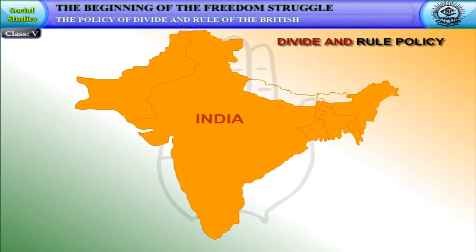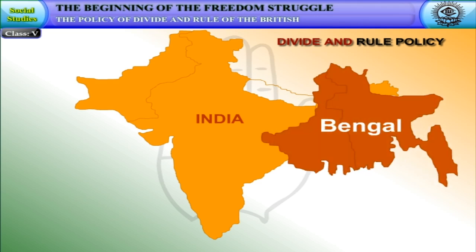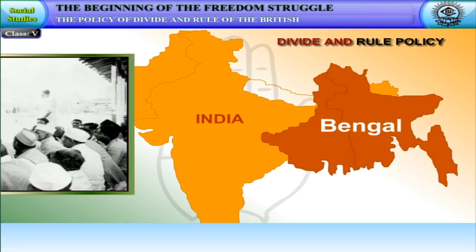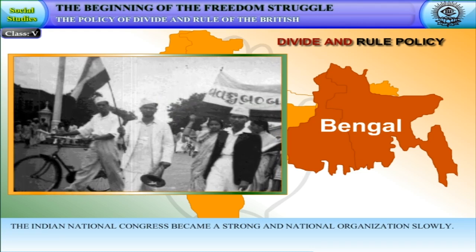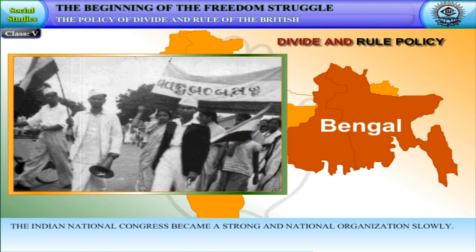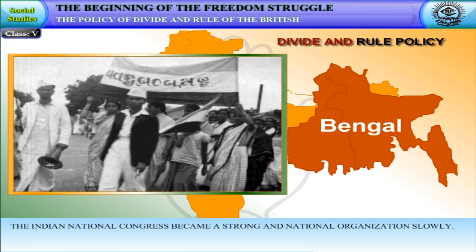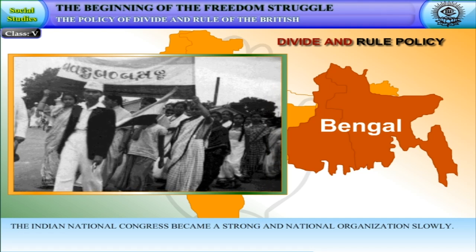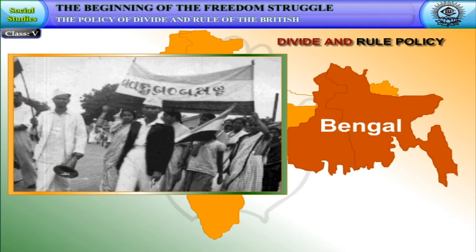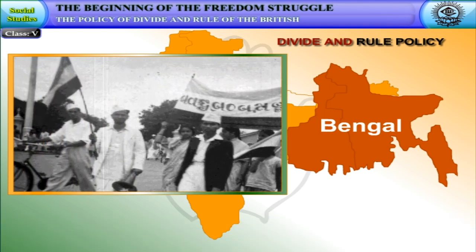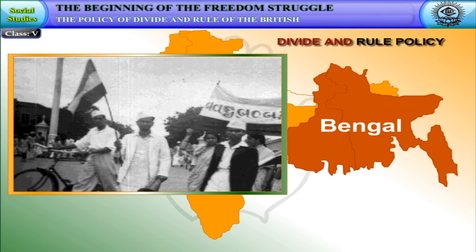Due to the British divide and rule policy, the Indian National Congress day by day became a strong and truly national organization. The whole country looked towards it for guidance. This made the British afraid, and they made all efforts to suppress its movements and activities.